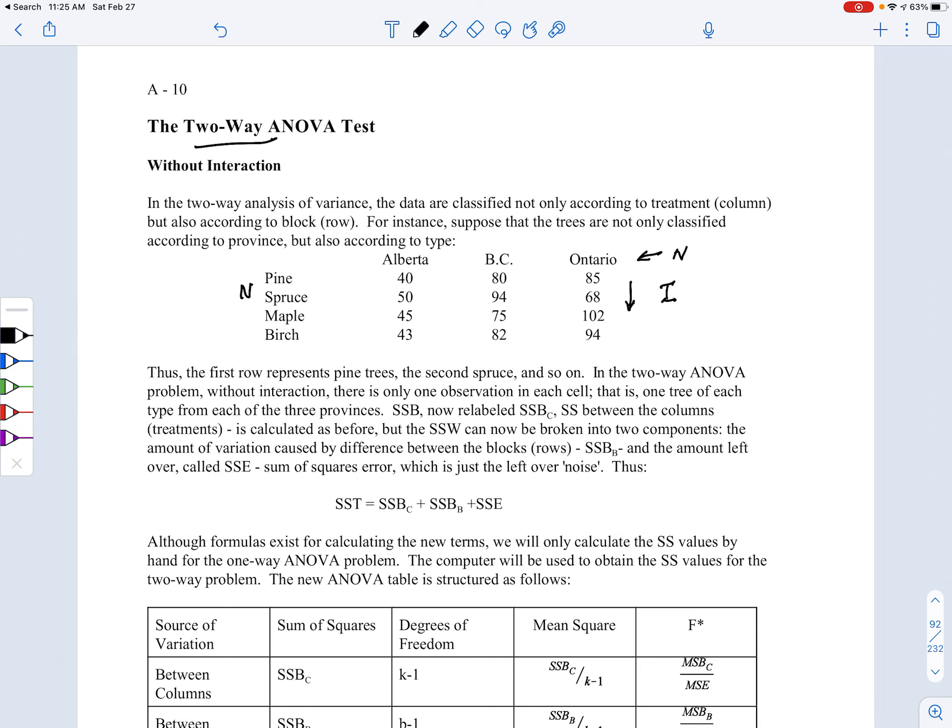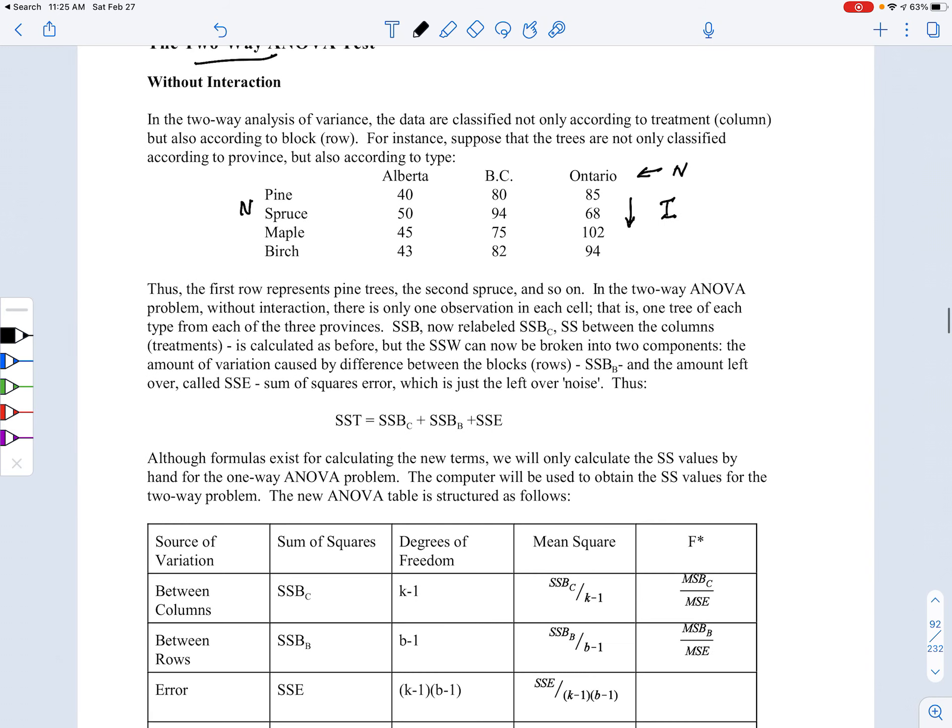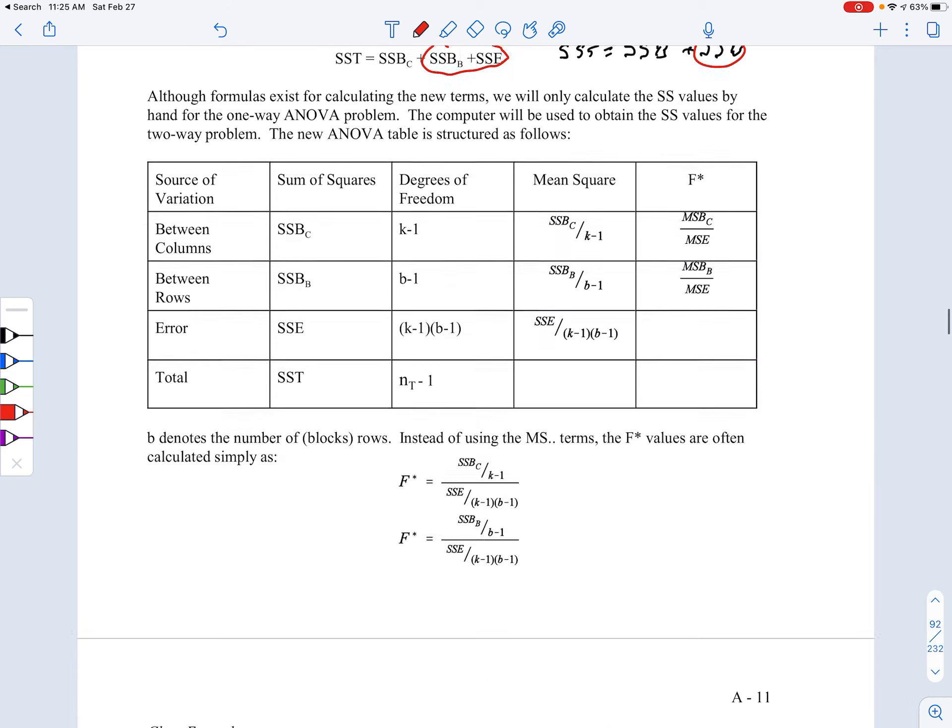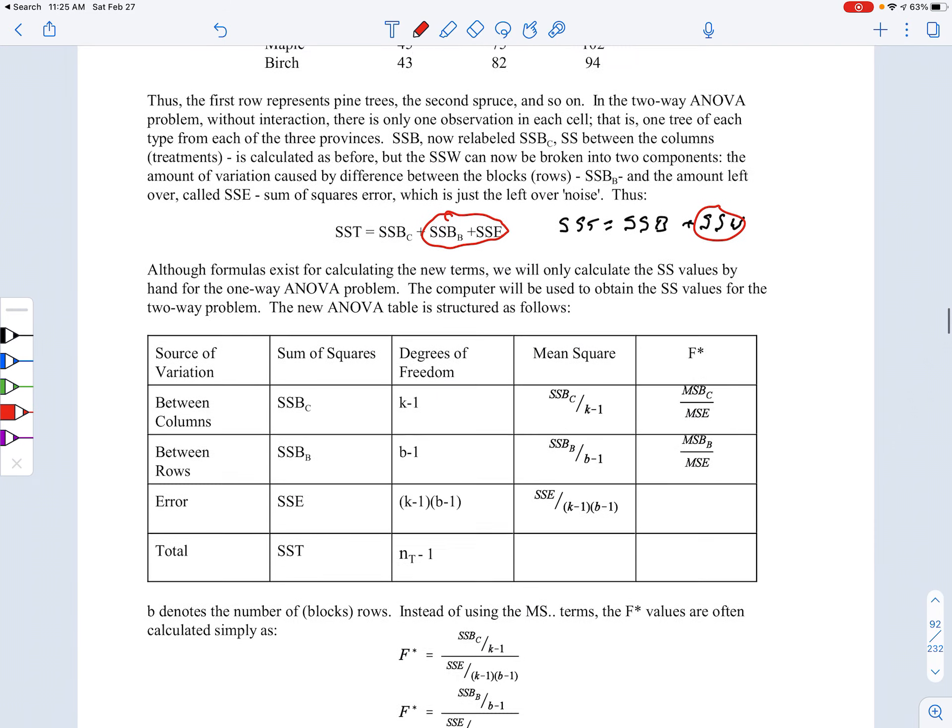What we do here is we take our formula - remember it was originally SST equals SSB plus SSW, so the amount of variation between the treatments and then the amount of variation within. We're going to take the SSW here and we're going to split it into two terms.